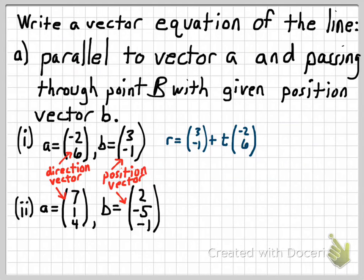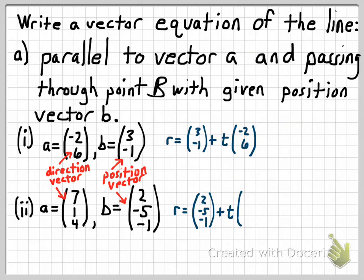For part 2 of this example, I'll show that this works in three dimensions the same way it does in two dimensions. There is no slope-intercept or point-slope form for three dimensions, but you can write the vector form of a line in three dimensions — which is a good reason to learn this skill. The position vector for our starting point is (2, −5, −1), so R equals that plus T times vector A, since the line is parallel to A. Very simple.